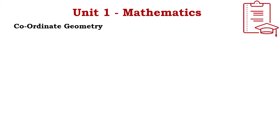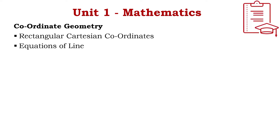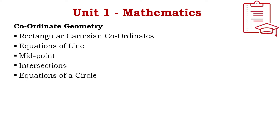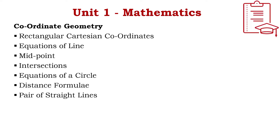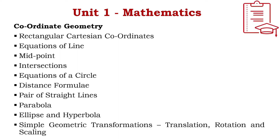The second subunit is Coordinate Geometry, covering rectangular Cartesian coordinates, equations of a line, midpoint, intersections, equations of a circle, distance formulae, pair of straight lines, parabola, ellipse and hyperbola, simple geometric transformations, translation, rotation, and scaling.